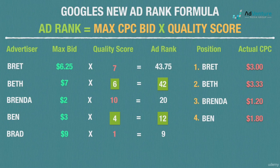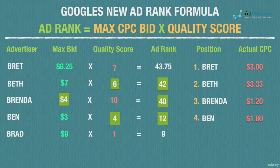What if Brenda wants to do better? She already has a 10 quality score, so she could raise her max CPC bid — say to $4. Her ad rank jumps to 40, but she's still in position 3 and still pays $1.20 per click even after doubling her bid, because $1.20 is all she needs to beat Ben.